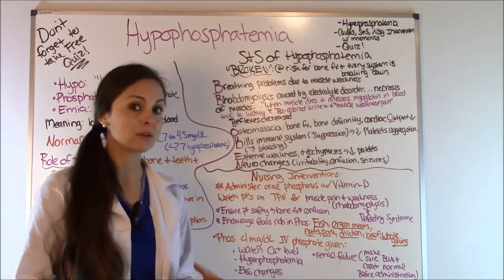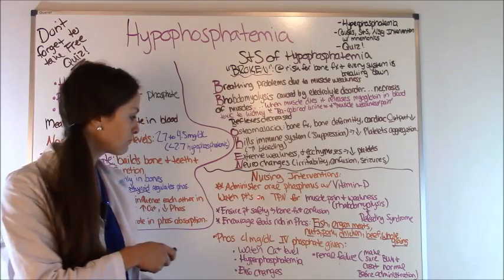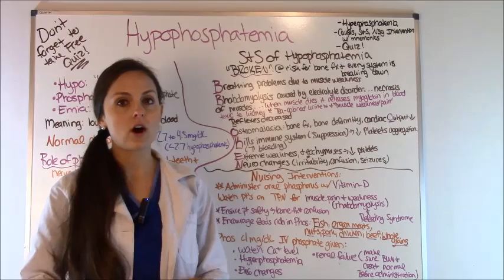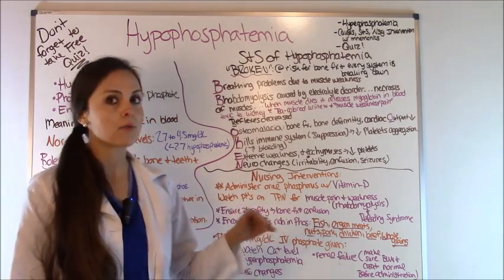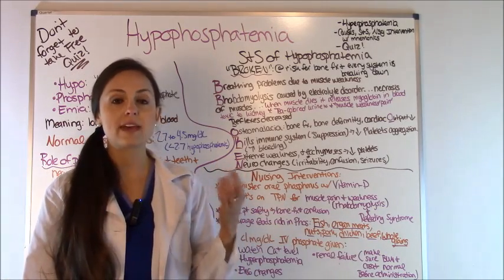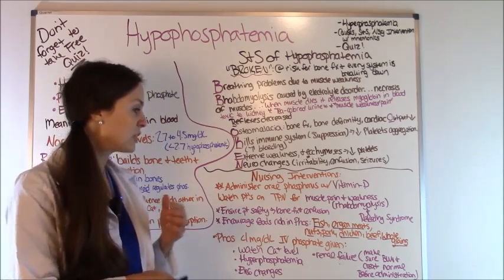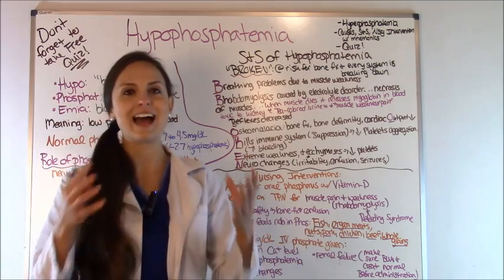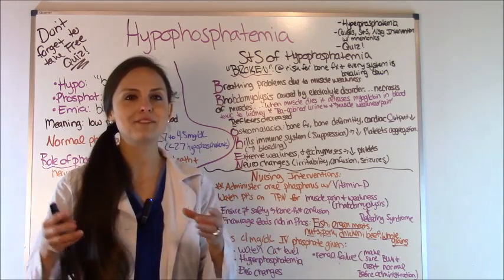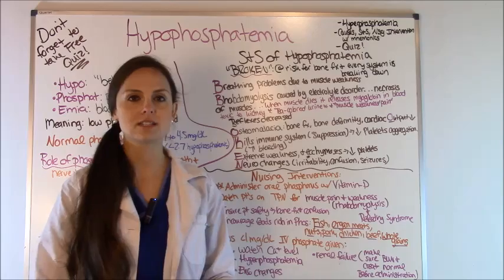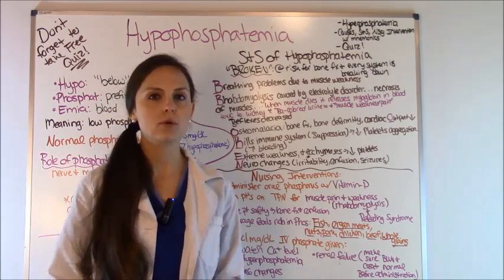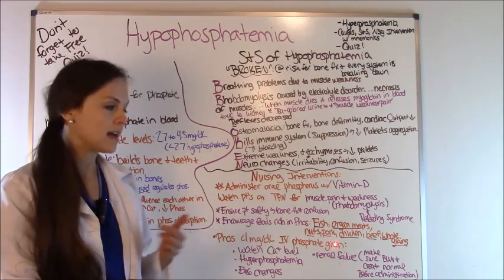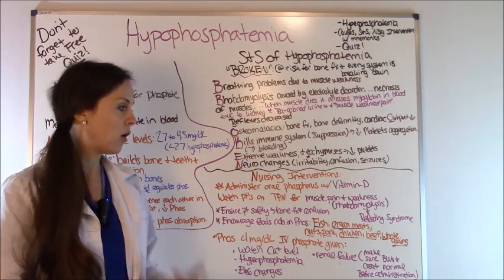Ensure patient safety — put the bed down and the call light in reach because this patient is at risk for bone fractures and has confusion. Encourage foods rich in phosphate, and remember these because exams love to ask which foods are richest in phosphate. If a patient has a phosphate level of 2.2, what would you give them to eat? Fish, organ meats, nuts, pork, chicken, beef, and whole grains are all good options — basically meats are a great choice.